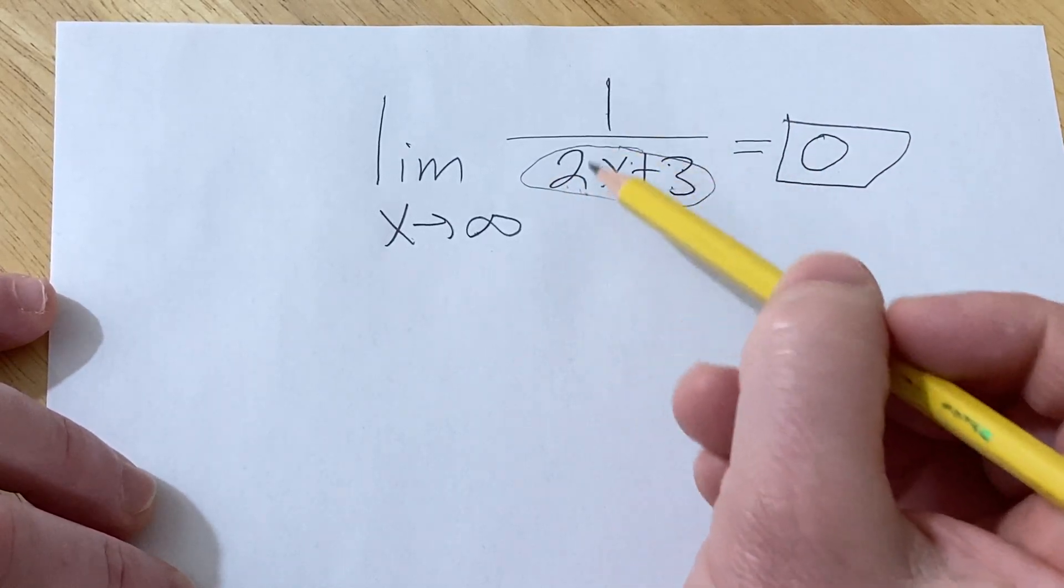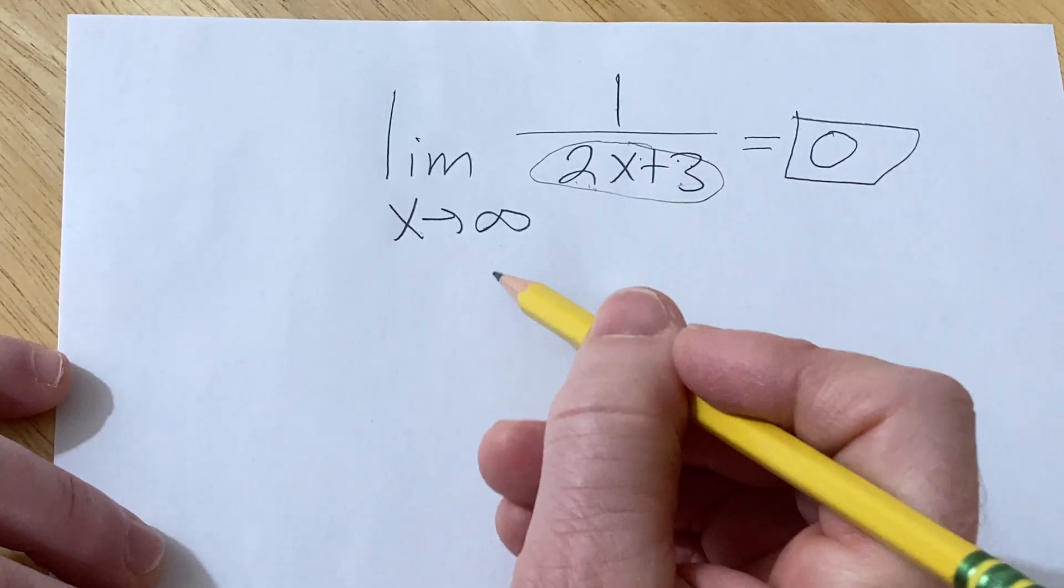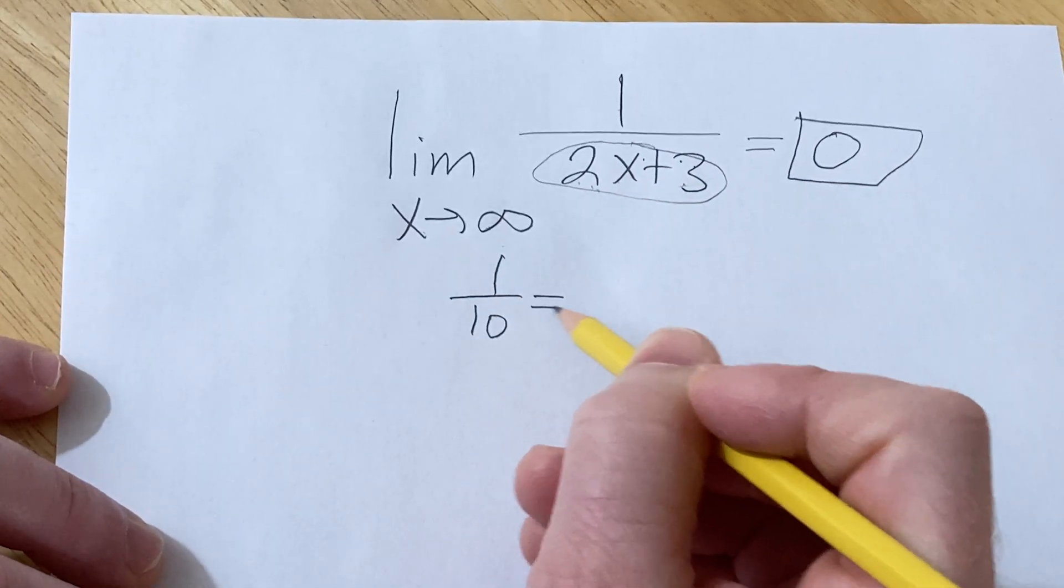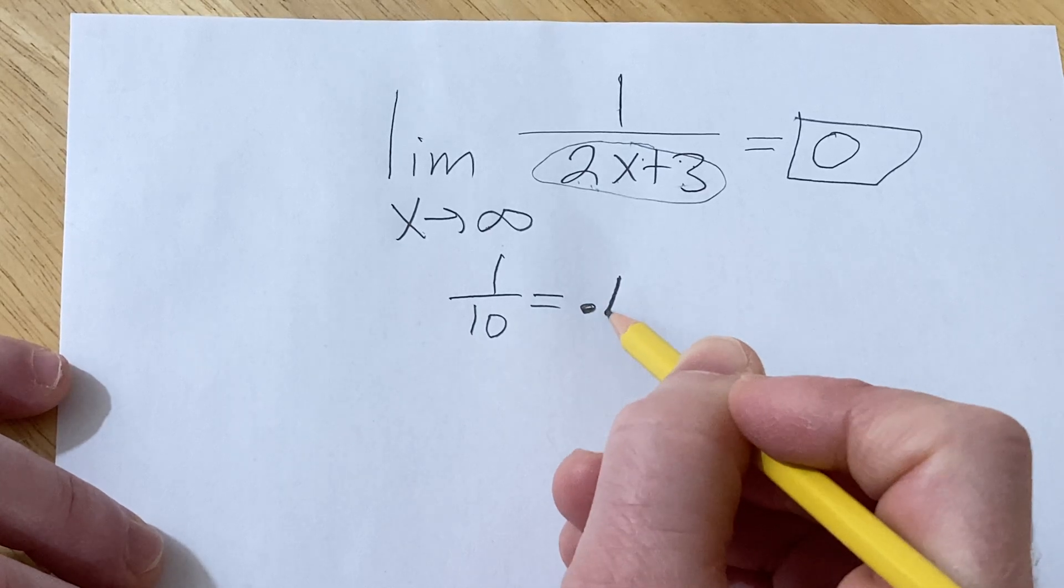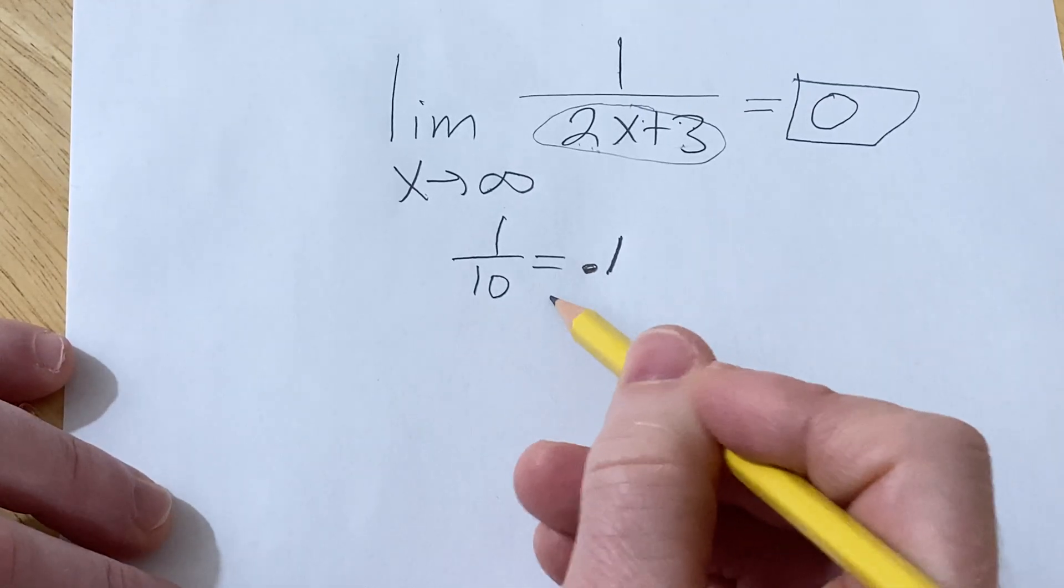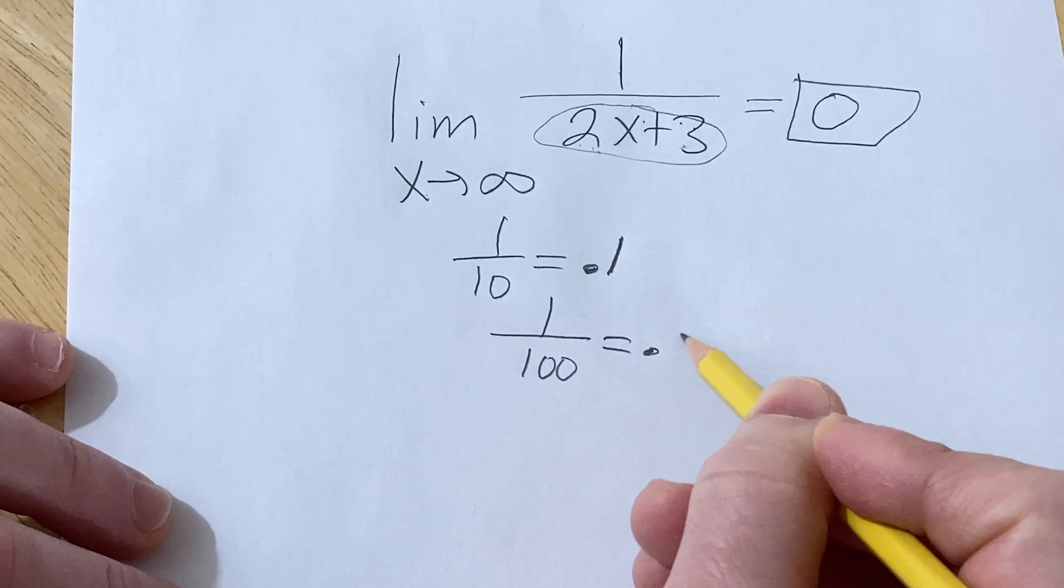If you're having a hard time understanding that concept, I like to think about numbers. If you have 1 over 10, that's 0.1. If you have 1 over 100, that's 0.01.